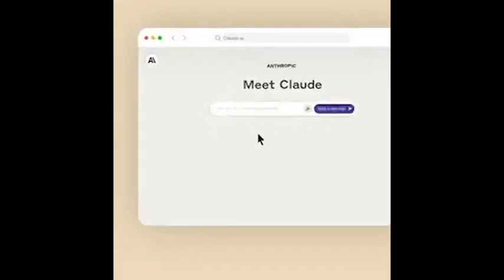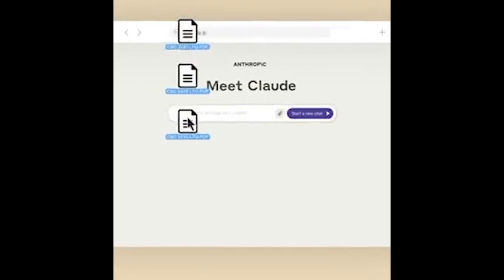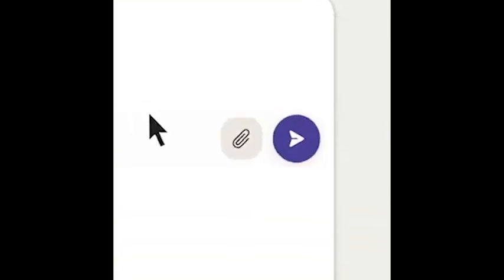The new model Claude 2.1 offers an industry-leading 200k token context window, a 2x decrease in hallucination rates, system prompts, tool use, and updated pricing. Claude 2.1 is available over API in console and is powering the chat experience.